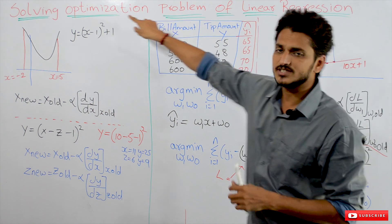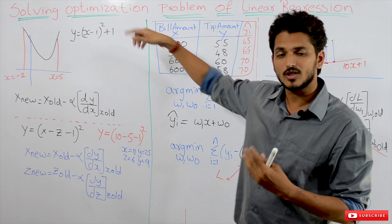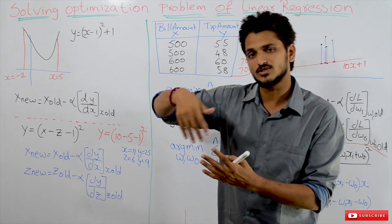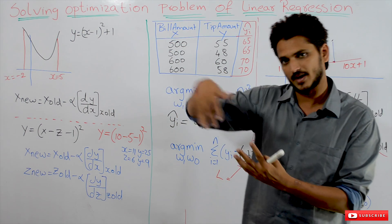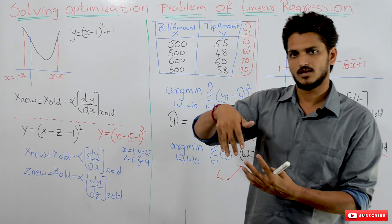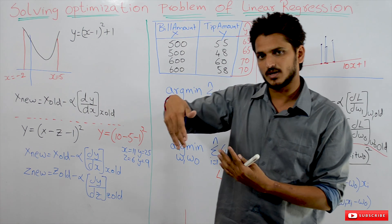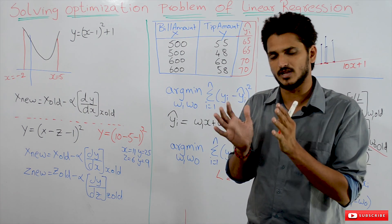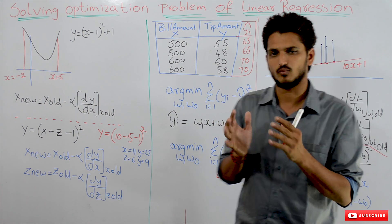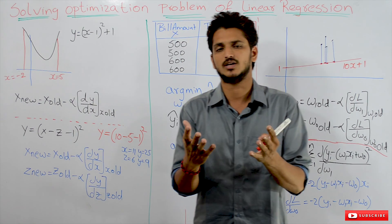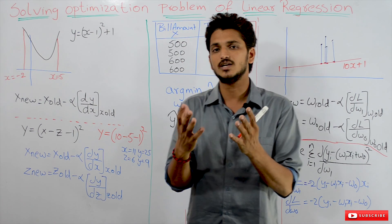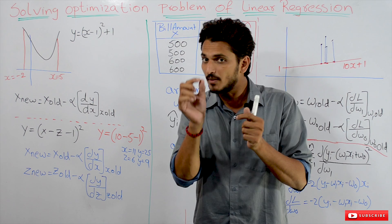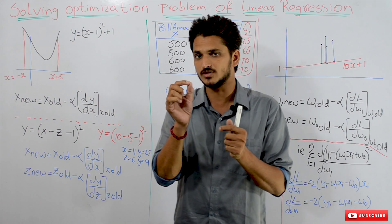The optimization problem was already discussed in our last class, so please watch that video and come back here. Before going into the concept, let's refresh the concept of gradient descent. Why do we use gradient descent? We use gradient descent in order to identify the minimum point of a function.